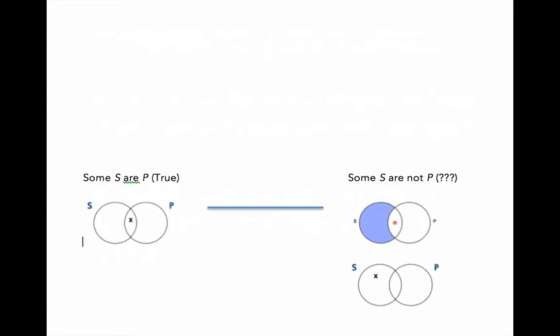Now, we cannot make a valid inference when our premise or particular claim is true. In other words, when our premise is true, when our particular claim is true, its subcontrary's truth value is undetermined. It may be true, it may be false, we just don't know.